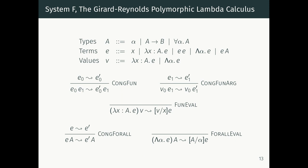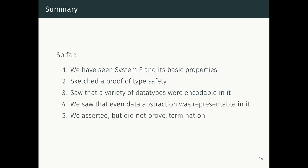System F has three type formers, five term formers, and just two value forms — the whole language fits on a single slide. We've shown it can encode all kinds of iteration over data, but can it encode full general recursion? Can we write an infinite loop? The answer is no. I've asserted that System F terminates, but haven't proved it yet. There's a lot of expressive power here, but we haven't shown we haven't made the language so powerful that we've broken logical consistency.